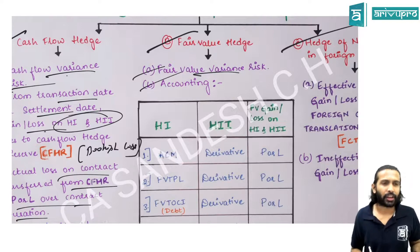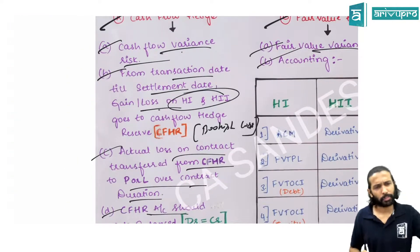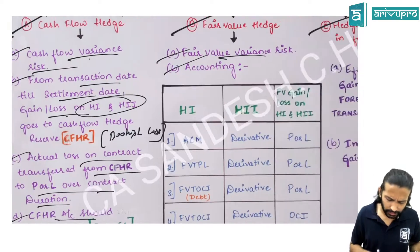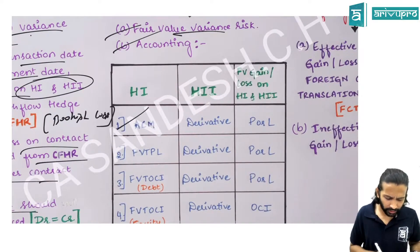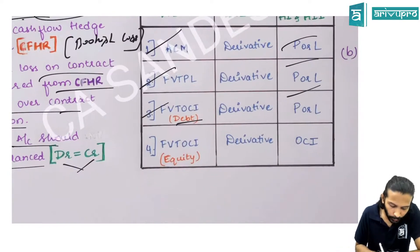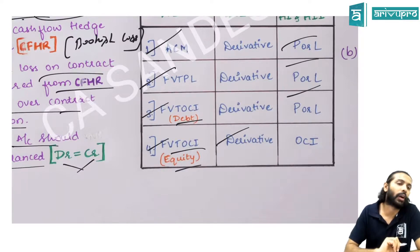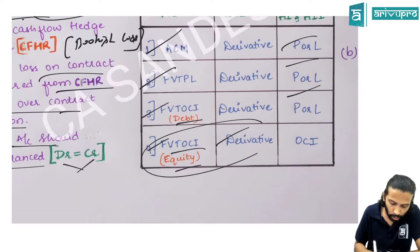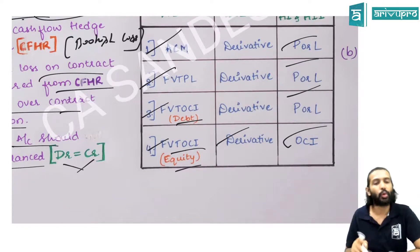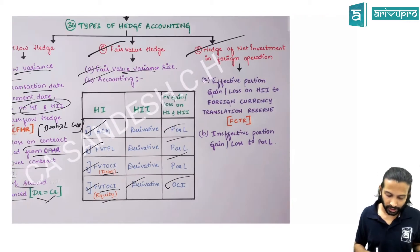Fair value hedge covers fair value change risk. Under fair value hedge, no separate OCI reserve is opened — everything goes to P&L, regardless of whether the financial asset is under ACM, FVTPL, or FVTOCI. Exception: for equity instruments measured under FVTOCI (irrevocable election) — gain/loss on both the hedged item and hedging instrument goes to OCI, not P&L.